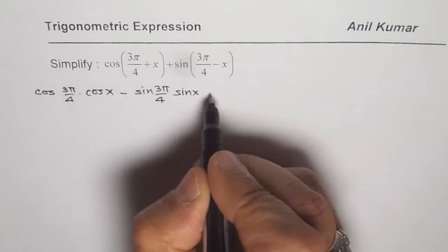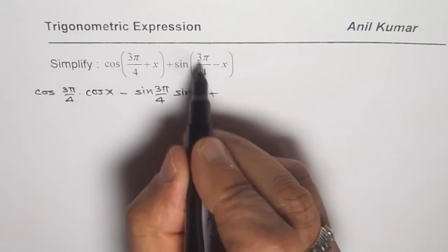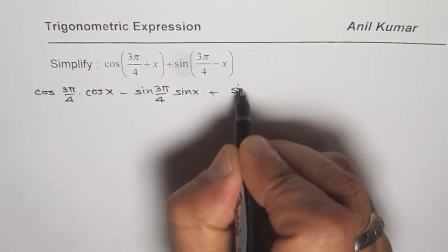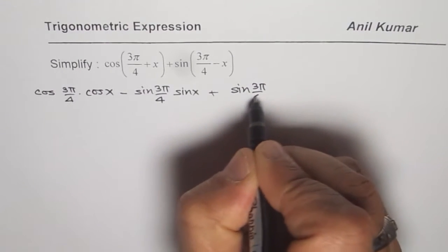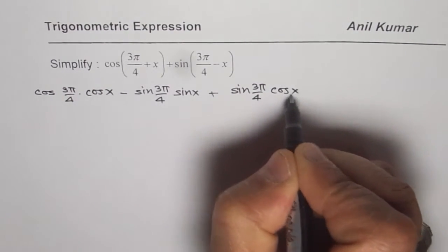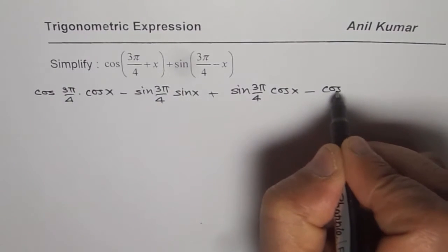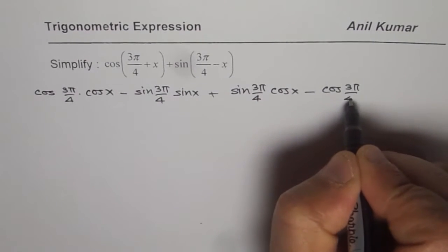Now let us expand the second term, sin(3π/4 - x), which is sin(3π/4)cos(x) - cos(3π/4)sin(x).